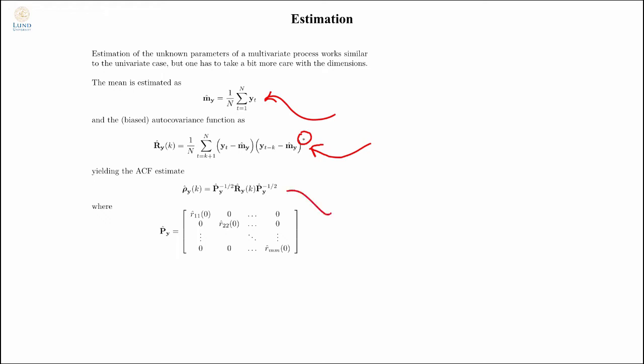I can form the ACF estimate just by using the definition, so I will estimate the outer covariance function, I will extract the m-th element, and then I will just scale it with that.